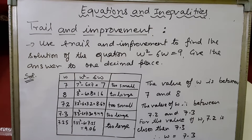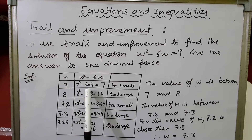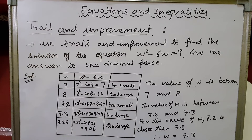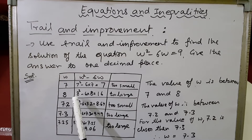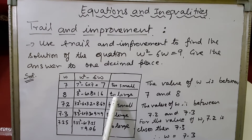We have to substitute values so that the result is closer to 9. Let's try w = 7: 7² - 6×7 = 49 - 42 = 7, which is too small. Then we substitute w = 8: 8² - 6×8 = 64 - 48 = 16, which is too large.